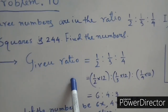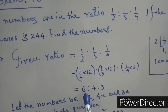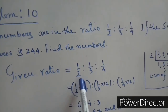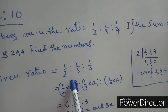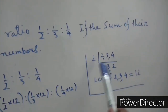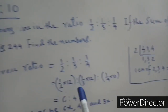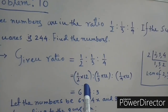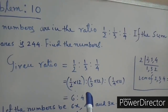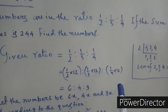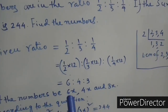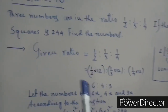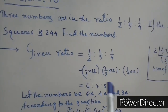The ratio 1/2 : 1/3 : 1/4 can be converted to a simpler form. The LCM of 2, 3, and 4 is 12. Multiplying each term by 12: (1/2)×12 : (1/3)×12 : (1/4)×12 gives 6 : 4 : 3.